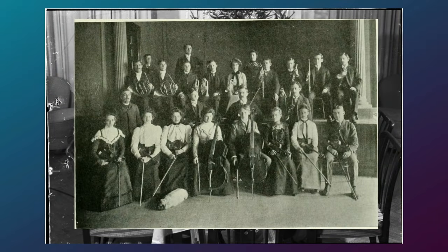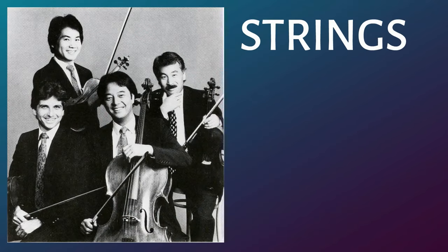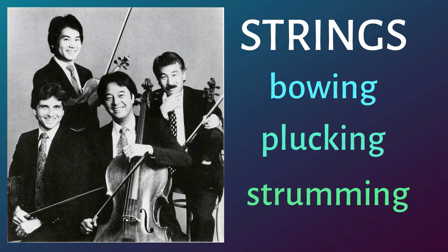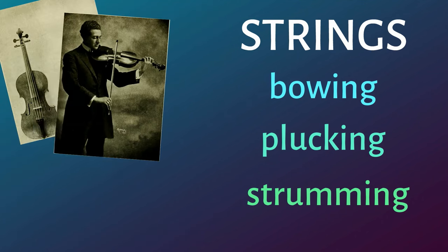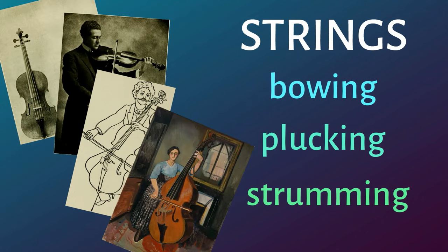We'll start with the orchestra's four families of instruments. The strings produce sound by causing strings to vibrate using three methods: bowing, plucking, and strumming. Examples include the violin, viola, cello, and contrabass.